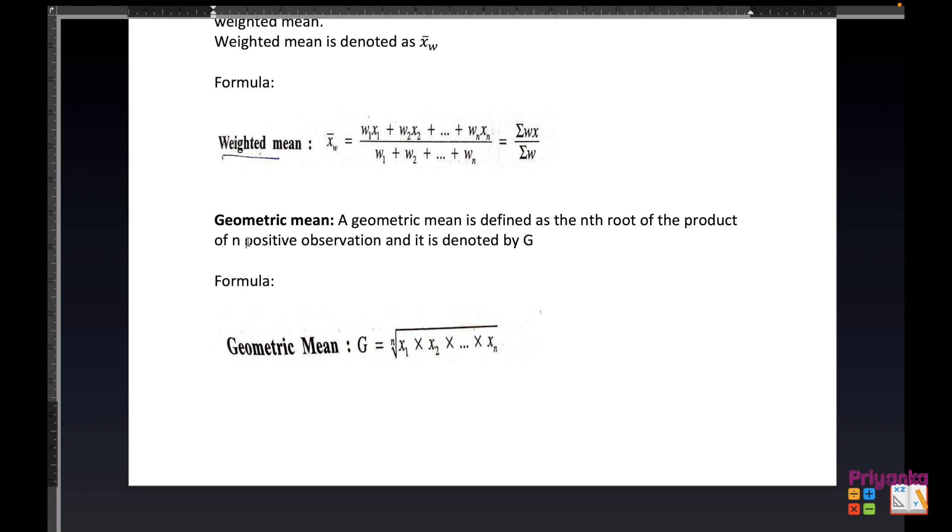Here we'll learn geometric mean. A geometric mean is defined as the nth root of the product of n observations, and it is denoted by G. Here the geometric mean is denoted by G, and this is the formula. N depends on what number of observations is given in the question, and all the observations will be numbered as x.